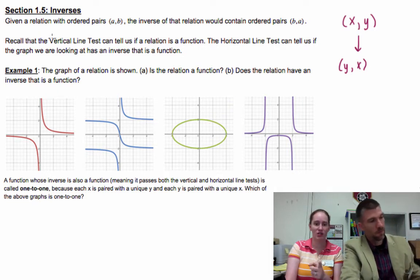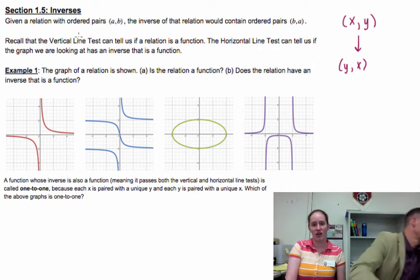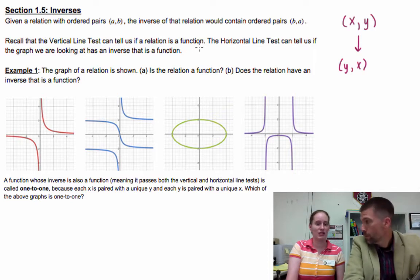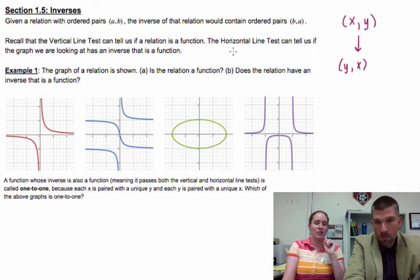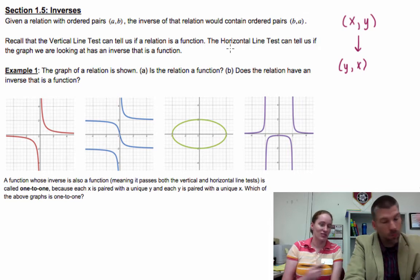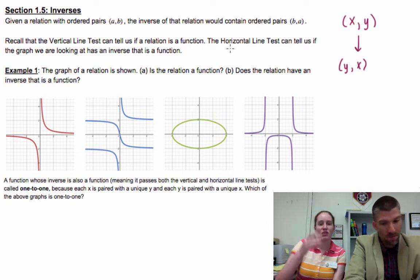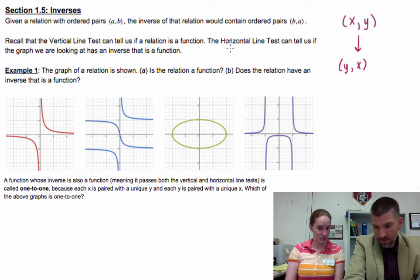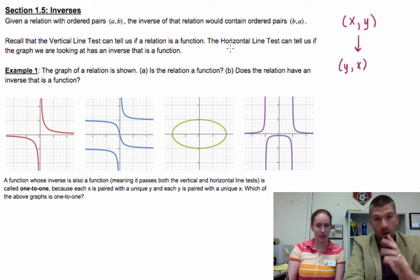Recall in 1.2, we talked about that the vertical line test can tell us if a relation is a function. Well, now we're going to talk about the horizontal line test, which can tell us if the graph we are looking at has an inverse that is a function. An inverse that's a function? Yes. I already like it.